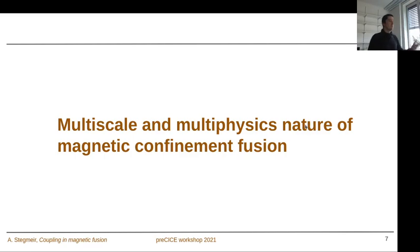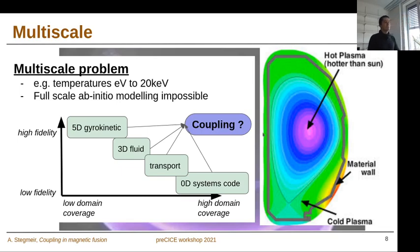Let me give you examples for the multi-scale and multi-physics nature of magnetic confinement fusion. What you can see here on the right is the cross section of the tokamak. In the very center you have the hot plasma that can be 10 times hotter than the sun, so about 20 kilo electron volts. As you go further and further out towards the reactor or chamber walls, you encounter colder plasma until you encounter room temperature at the material wall. So we have temperatures within 50-60 centimeters that span from electron volts close to the material walls to several kilo electron volts in the center.